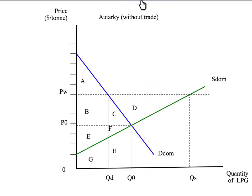Let's start by analyzing the situation in autarky. In that situation, consumers initially consume Q0 and pay P0. So consumer surplus is the area under the demand curve above the price consumers pay, up to the quantity they purchase — that's area A plus B plus C. For producers, producer surplus is the area above the supply curve up to the price producers receive, up to the amount they sell — so it's area E and F.